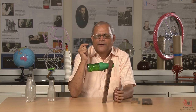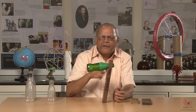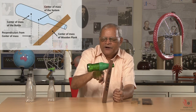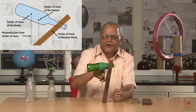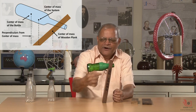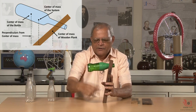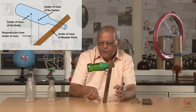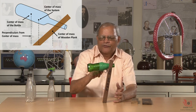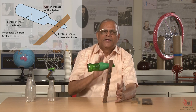Equilibrium. The reason is the centre of mass of the combined body — bottle and plank. The combined body's centre of mass is here. If the centre of mass is here and if I drop the plumb line, a vertical downward line, it passes through the base of this plank. So when it passes through the base, it will have equilibrium. It will balance.